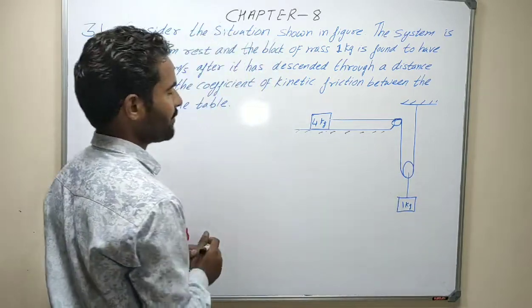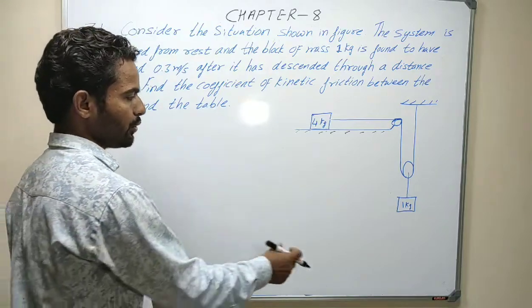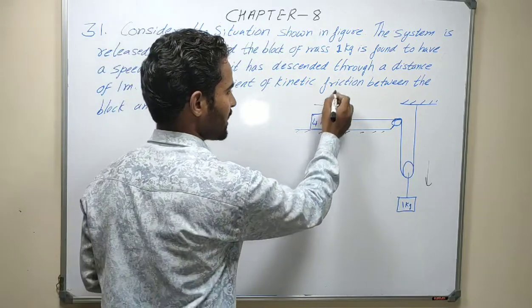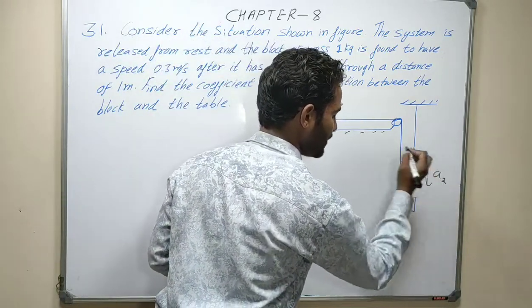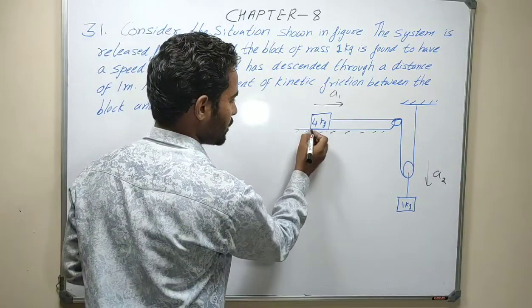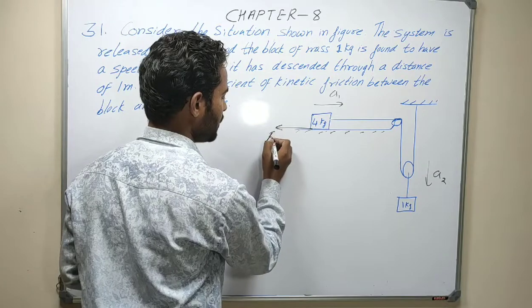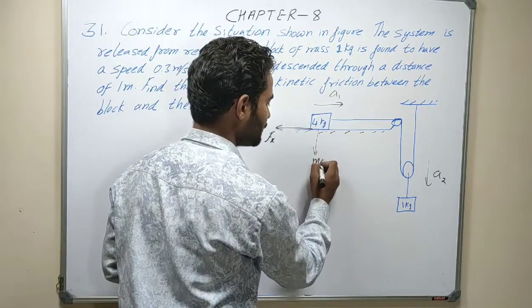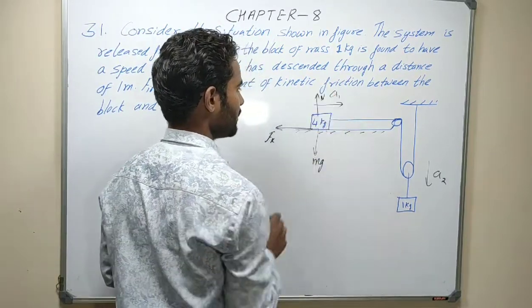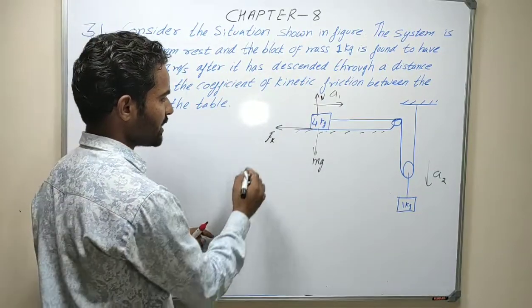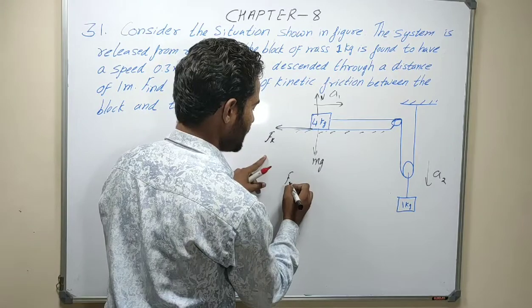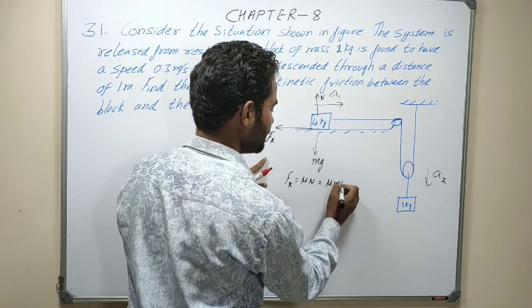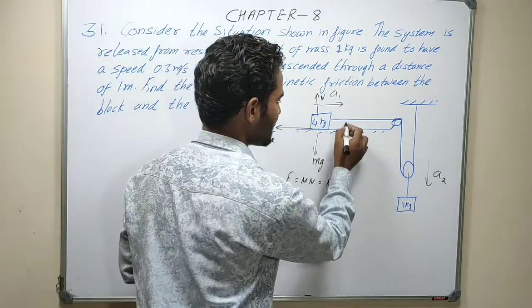We need to find the coefficient of kinetic friction. Kinetic friction is equal to mu times N. Here kinetic friction is mu times mg. Tension is T on all connected segments.